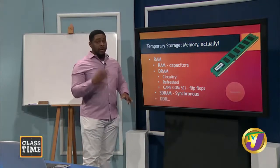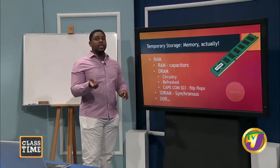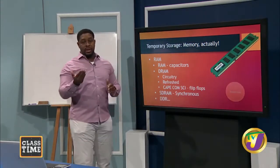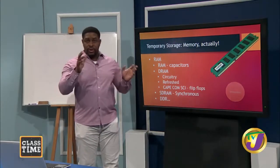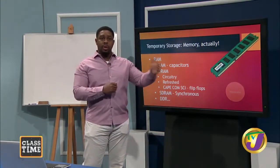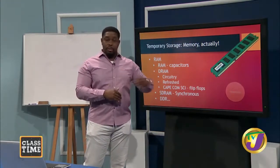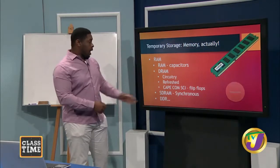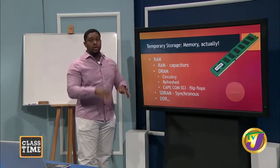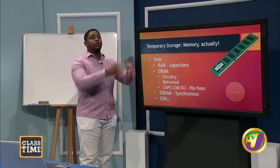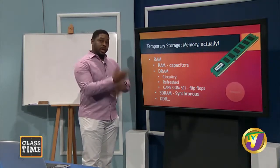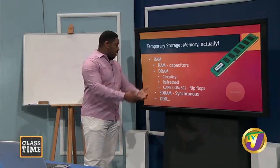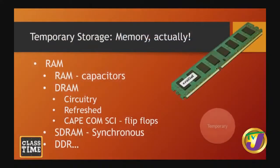We also looked at DDR — double data rate — and there are about four or five levels depending on what machine you are working with. DDR is about increasing the rate at which information is written to or taken from RAM.